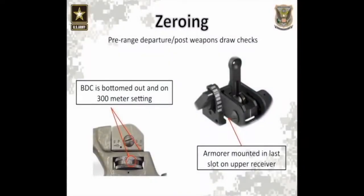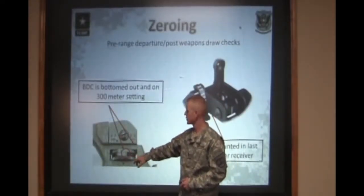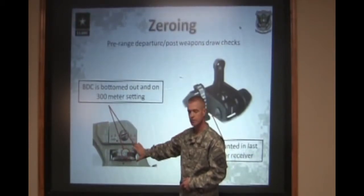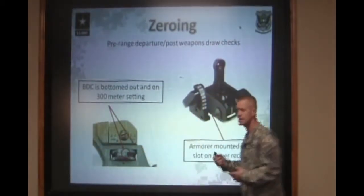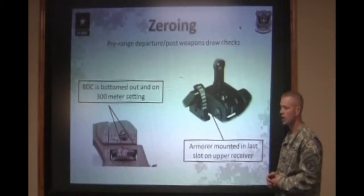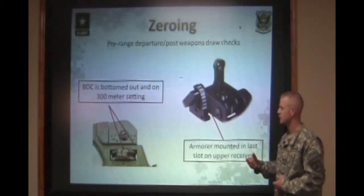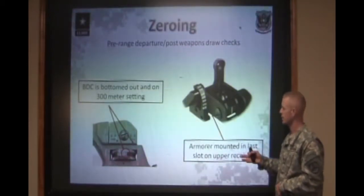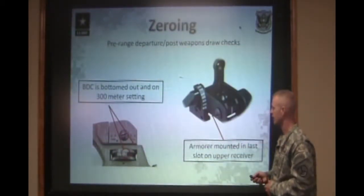To zero at 25 meters, we need to ensure that the elevation wheel is set at 8/3 and there's no gap between the rear sight itself and the charging handle. For the M16A2 rifle, you need to zero at 25 meters at 8/3 plus 1. For the M4s, you need to leave it so it will be 6/3 for that carrying handle.